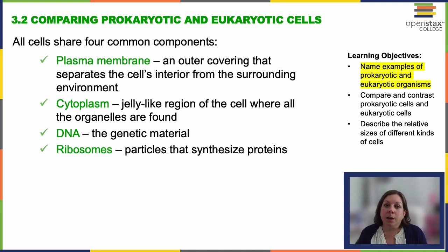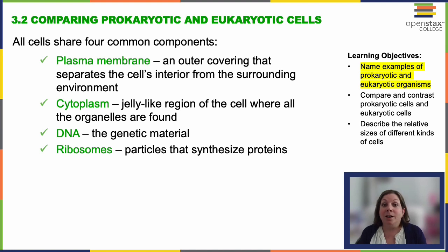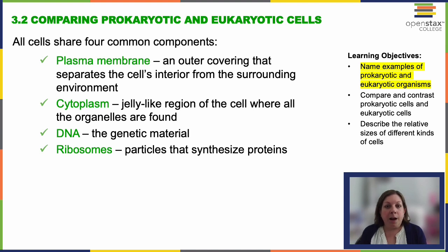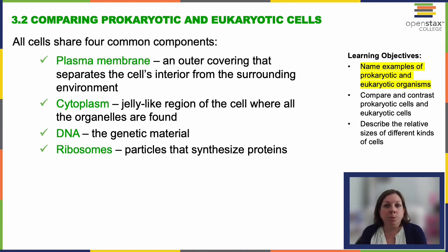Both types of cells have a cell membrane, cytoplasm, and some form of genetic material — though the amount varies — and they both have ribosomes to translate that genetic material into proteins. But the organization is completely different, and that organization differs not just between prokaryotes and eukaryotes, but even amongst the different groups we can see a really diverse range of organizational structures.